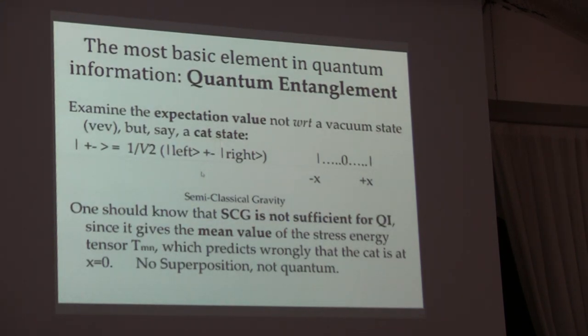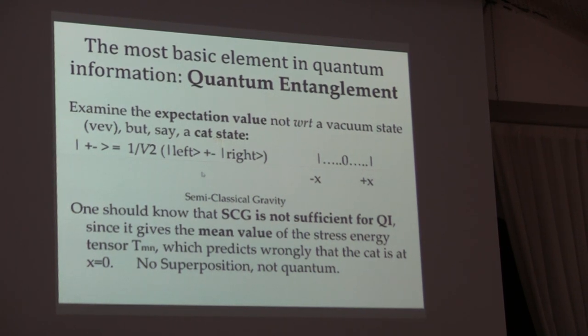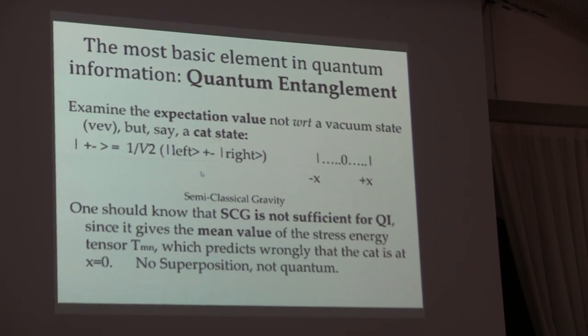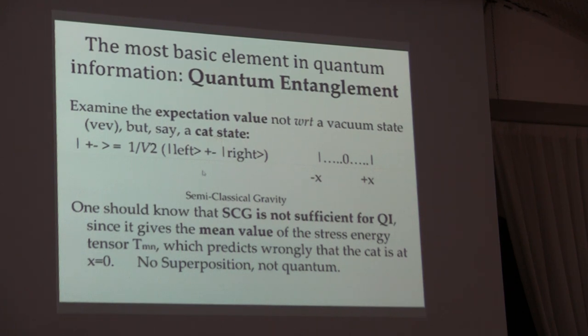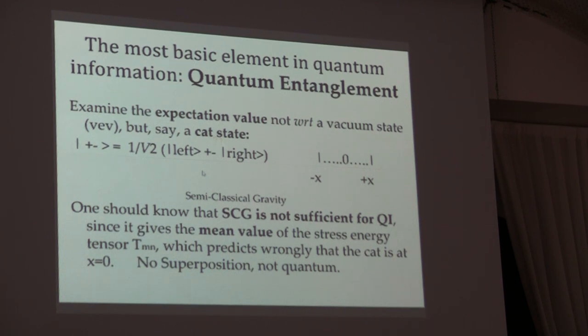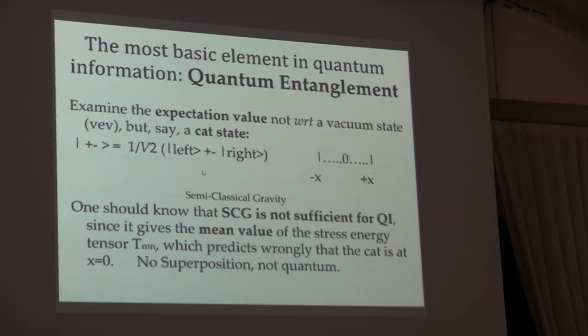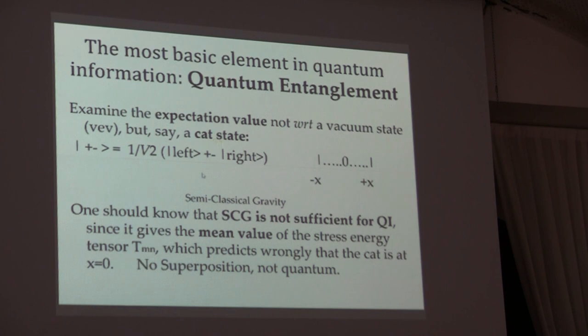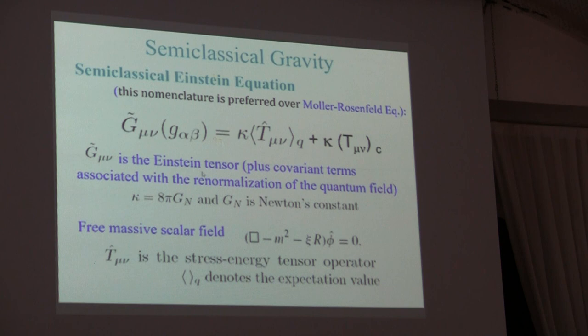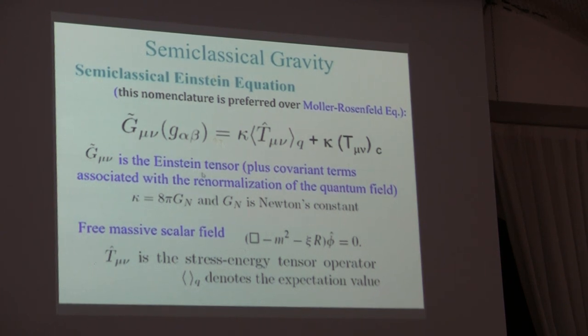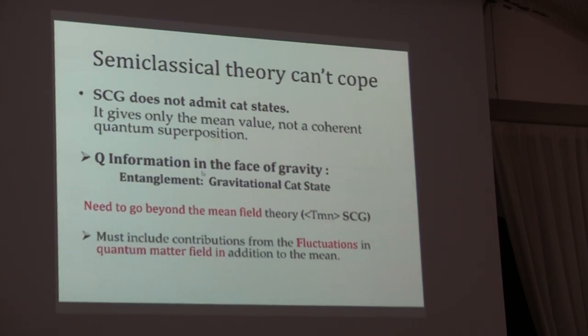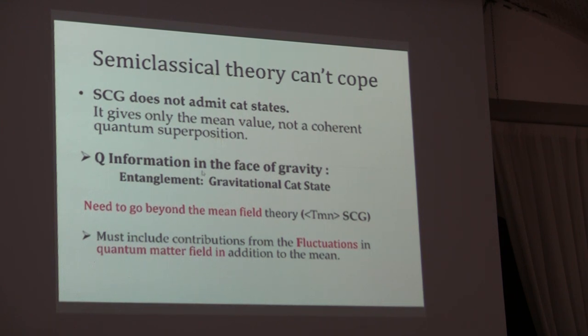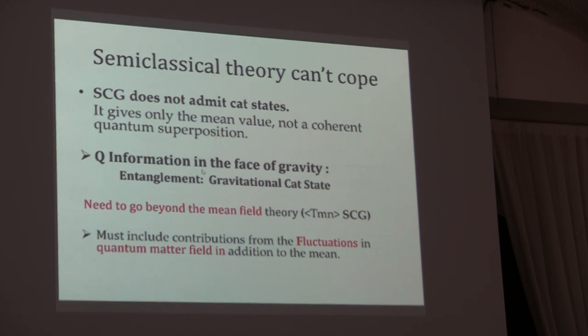For entanglement, if you have the wave function with left and right, plus x and minus x, the first thing to notice is that the semi-classical gravity, being a mean field theory, would never be able to handle this situation. This is such a simple thing. Cat state has been there for as long as Schrödinger has been saying that. But if you just take the average value without going to the correlation or the fluctuation, there's no hope.